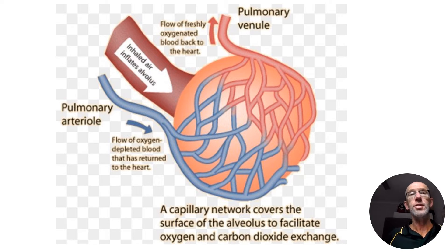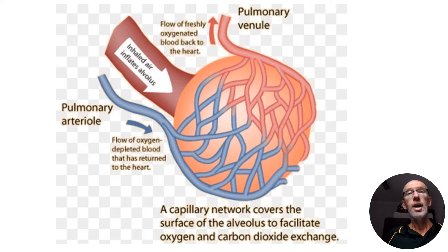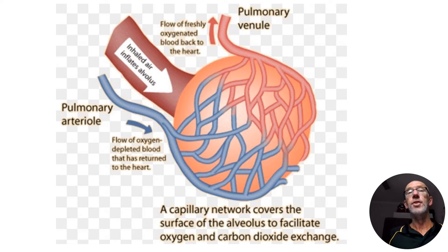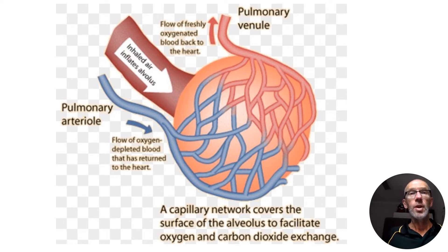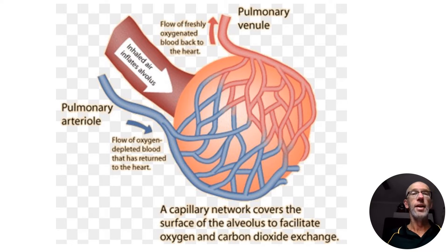The circulatory system relies on the blood vessels, specifically the capillaries, which have thin walls to enable an efficient form of diffusion. And then we have the tiny little air sacs known as alveoli, which also have thin walls that, again, enable the diffusion to occur.